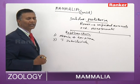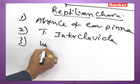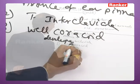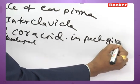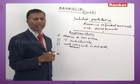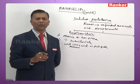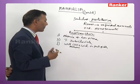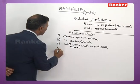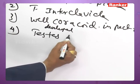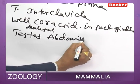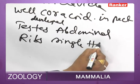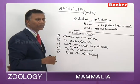(3) Well-developed coracoid is present in the pectoral girdle, as in reptiles — in other mammals, coracoids are reduced and epi- and precoracoids are absent. (4) Testes are abdominal. (5) Ribs are single-headed, unlike other mammals.